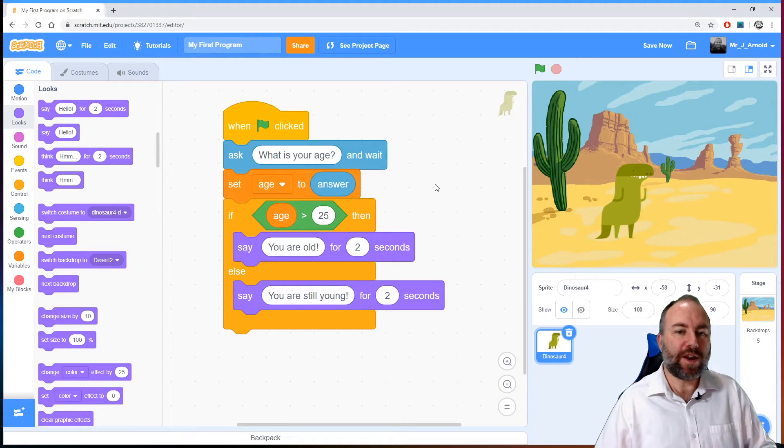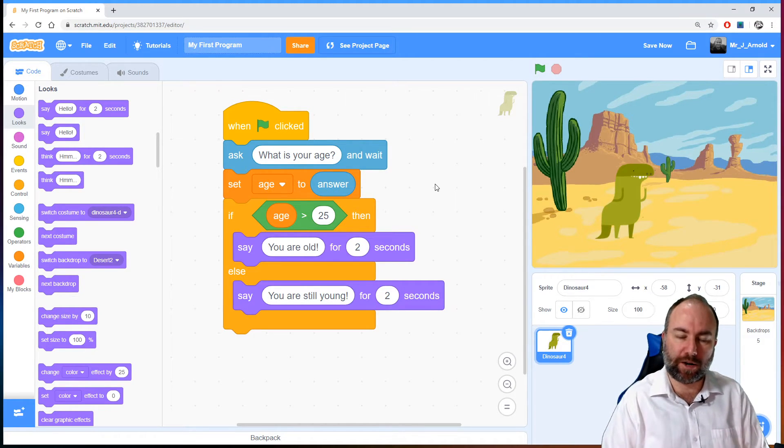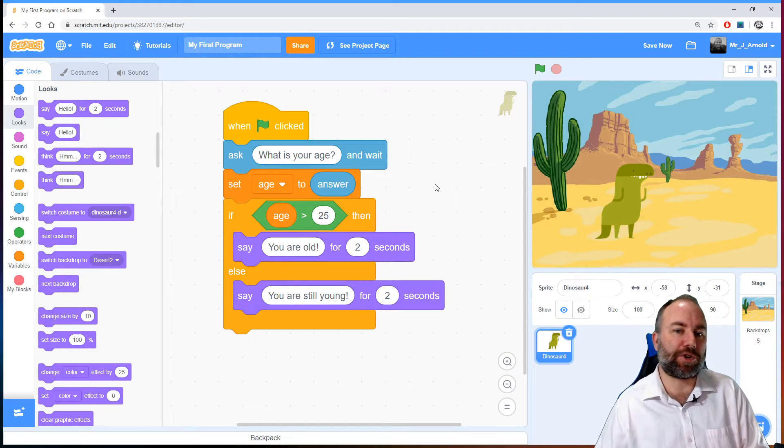So now we know that one of these two blocks of code will be run but only one of them. We can't ever have both of them. We can't be old and young. So if the age is more than 25 we'll do the first action. Otherwise whatever else we put in, we will do the second action.